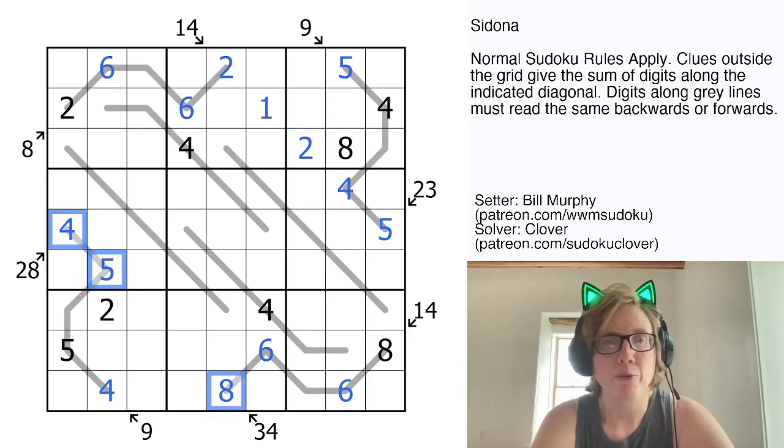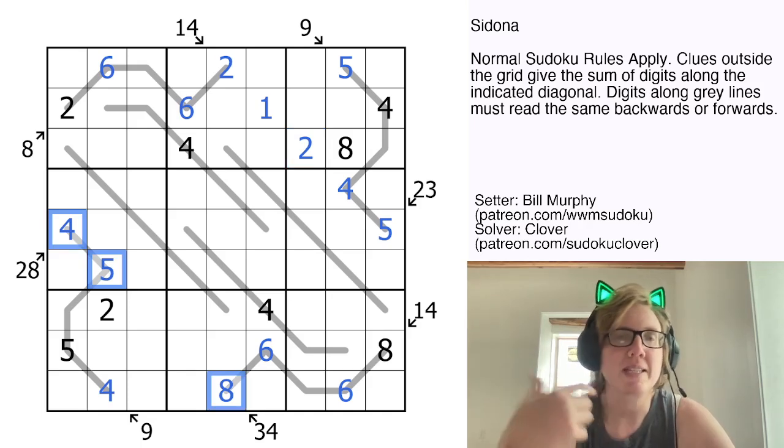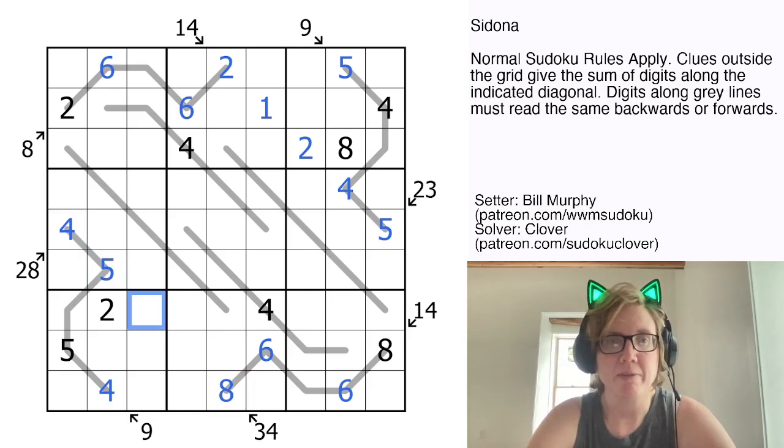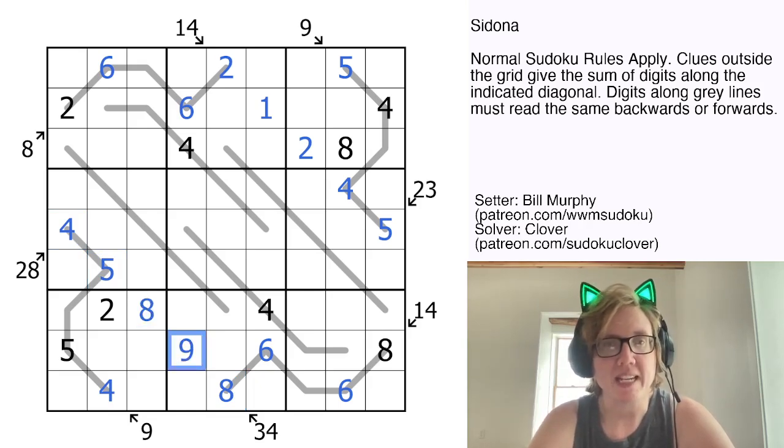So to make 34 I have a 4, 5, and 8. That's already a total of 4 plus 5 is 9, plus 8 is 17. So 34 minus 17 is 17, so I need 8 plus 9 to make a 17 here. So that will be an 8, and that will be a 9.